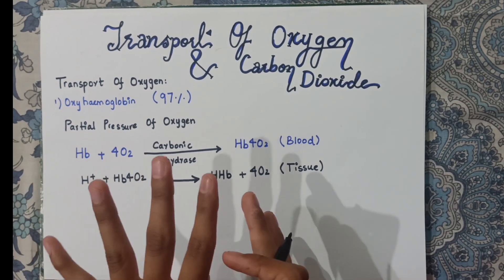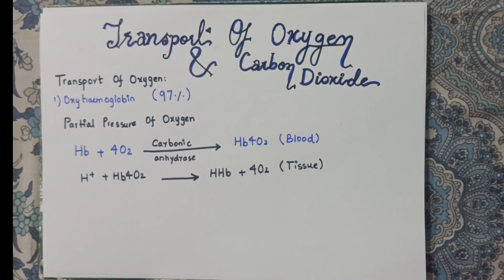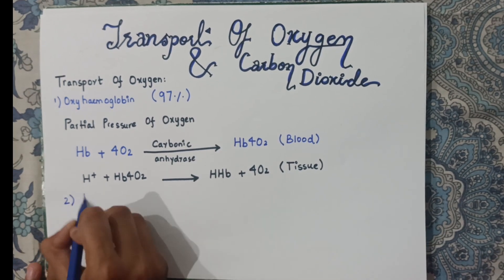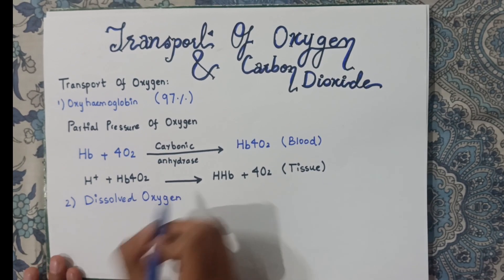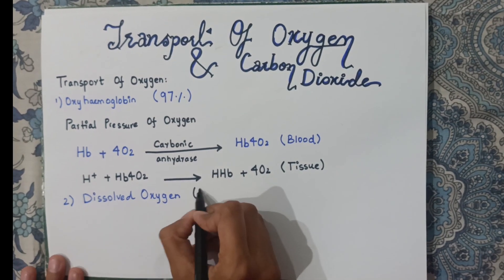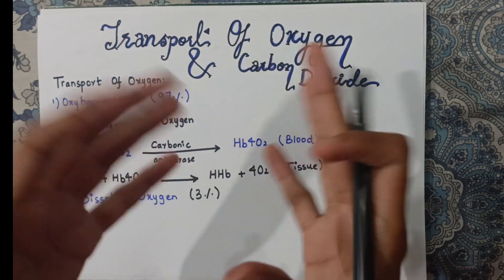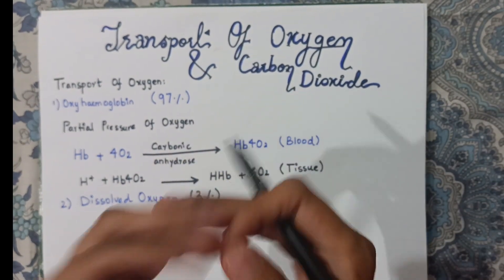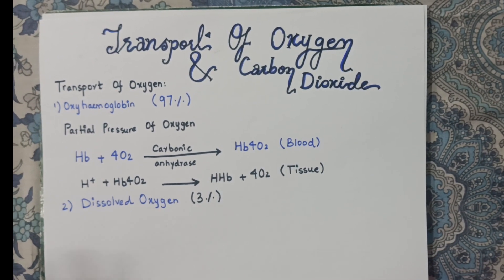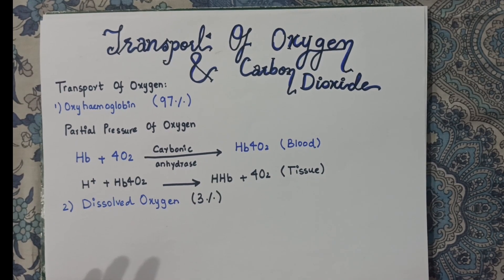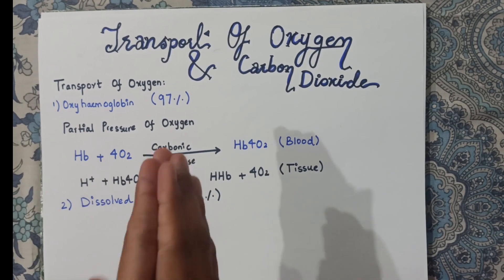The other method of oxygen transport is in dissolved form. Only 3% of oxygen is transported this way. This is a very inefficient method and cannot transport larger quantities of oxygen. But because it does occur in the body, it is mentioned. So these are the two methods of oxygen transport: in the form of oxyhemoglobin, and as dissolved oxygen.